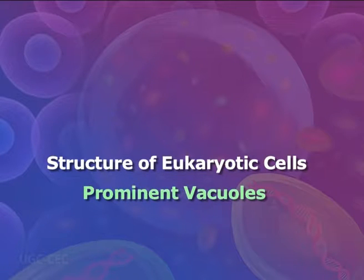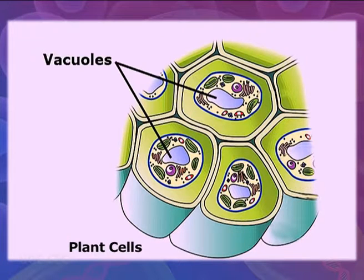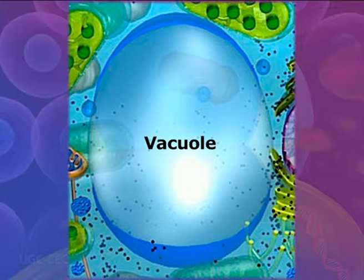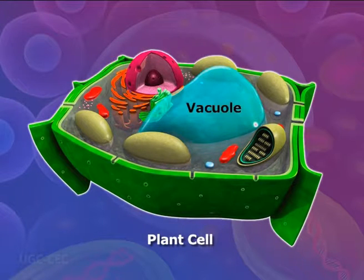The vacuole in plant cells is a large membrane-bound sac that fills up much of most plant cells. It serves as a storage area and may contain stored organic molecules as well as inorganic ions, and is also used to store waste. While vacuoles are prominent in plants, they are small and more numerous in animal cells.